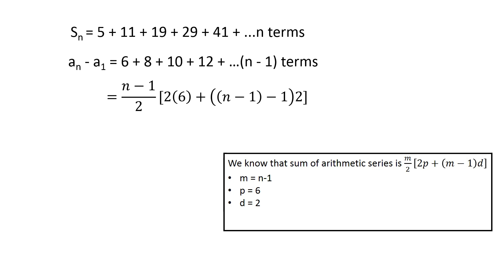We can use this formula to calculate the sum of this arithmetic series, and simplifying it, we get an minus a1 equals n square plus 3 times n minus 4.